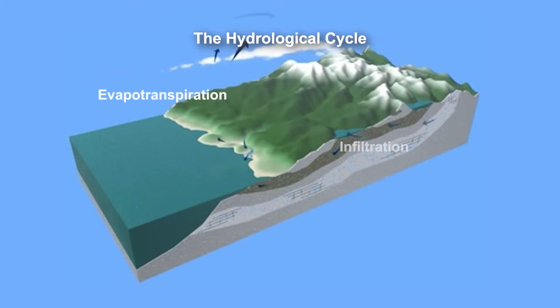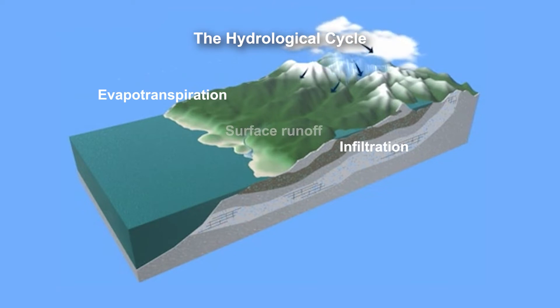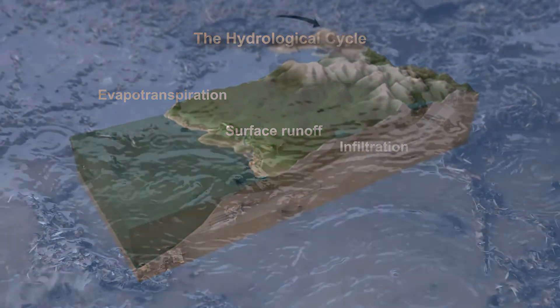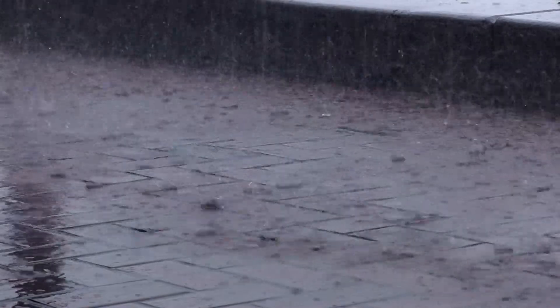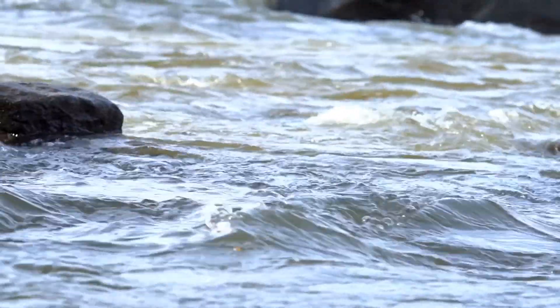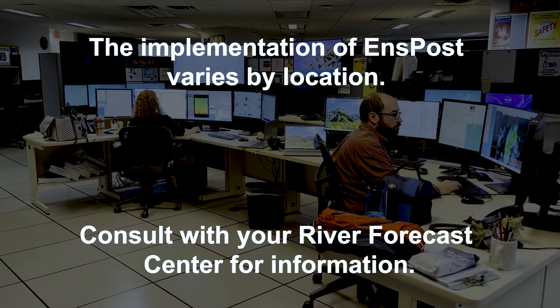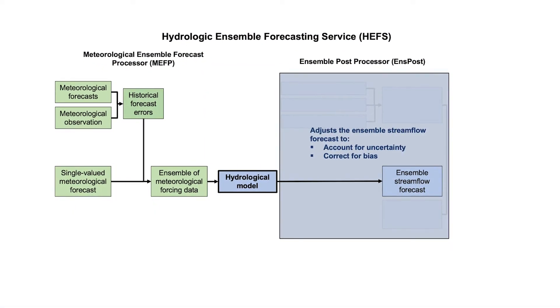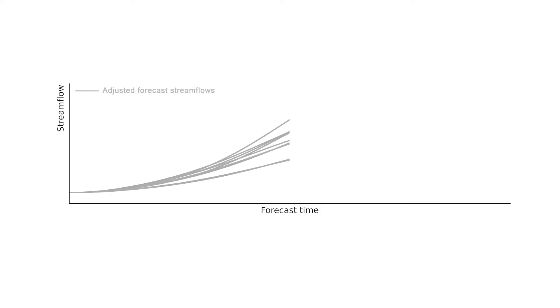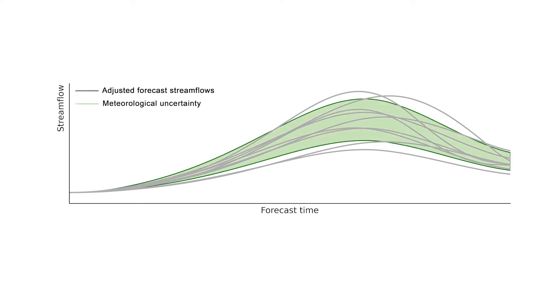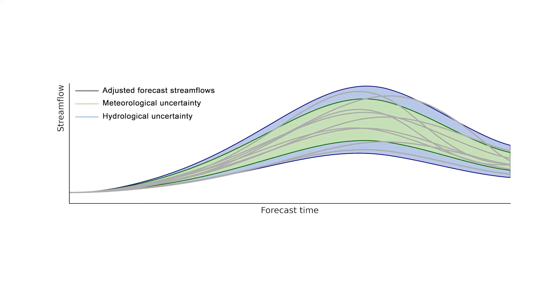In this step, uncertainty arises from the different components of the hydrological modeling, such as the soil moisture states or the hydrological routing parameters. The implementation of ONSPOST currently varies by location, so consult with your regional river forecast center for information on if and how it is used in your local HEFS forecast. The end product of HEFS is an ensemble of bias-corrected forecast streamflows that account for the meteorological and hydrological modeling uncertainty.